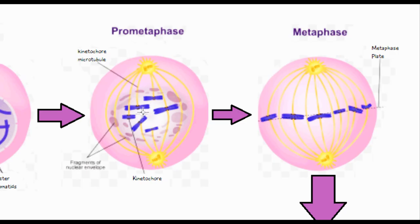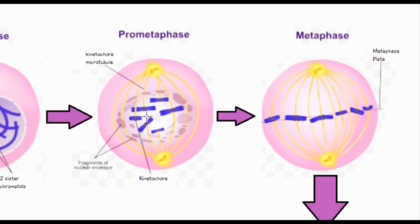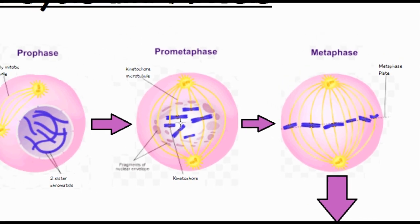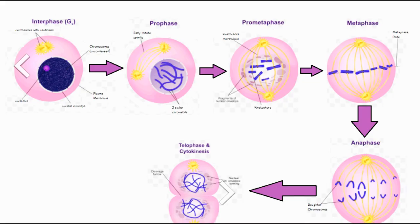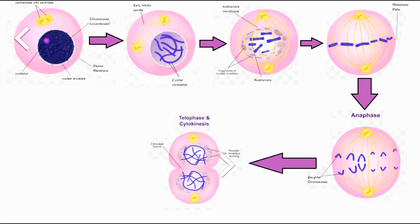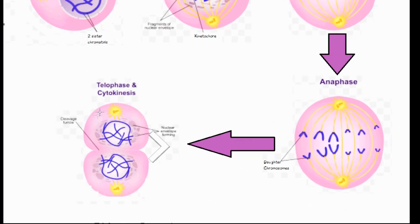In metaphase, all that happens is there's an alignment to the center, or equator, of the cell. Then in anaphase, the chromosomes break from this attachment point — they break from the centromere — and they start moving to opposite ends of the cell.